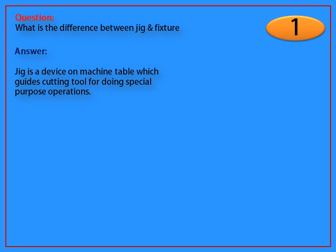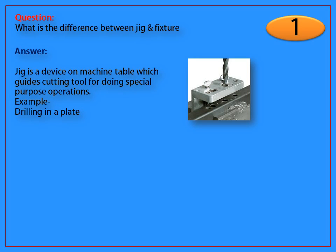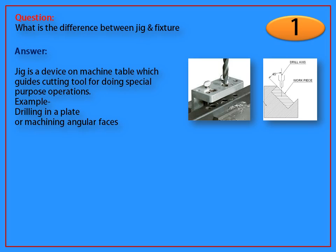Jig is a device on machine table which guides cutting tool for doing special-purpose operations. Example: drilling in a plate or machining angular faces.